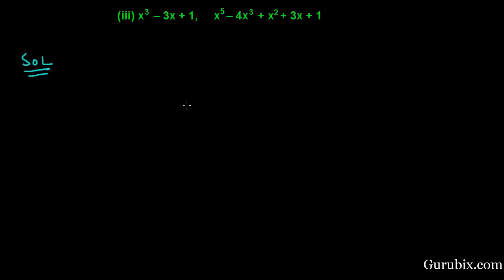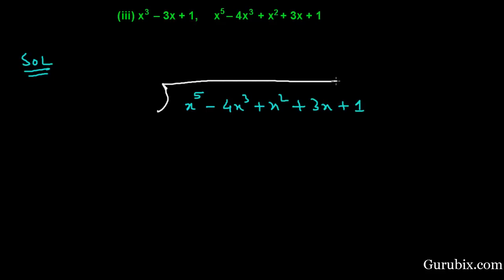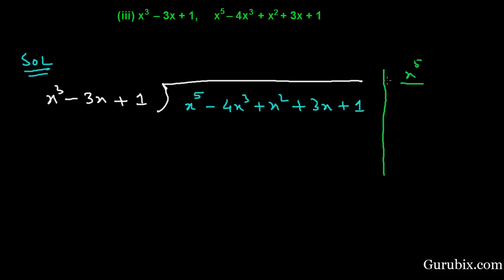First, we shall write the second polynomial in the middle of the page: x raised to the fifth power minus 4x cubed plus x squared plus 3x plus 1. We have to divide this polynomial by x cubed minus 3x plus 1. We need to write both polynomials in their standard form. We shall find the first term of the quotient by dividing the first term of the dividend, x to the fifth power, by the first term of the divisor, x cubed.